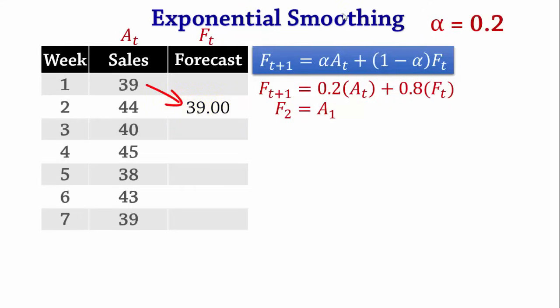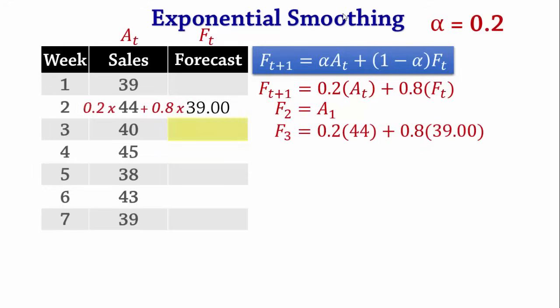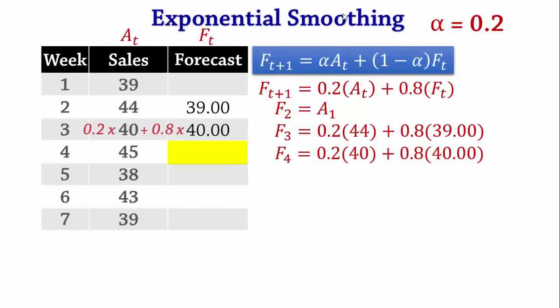Our first real use of the formula begins with F3. F3 = 0.2 × 44 + 0.8 × 39 = 40. Consequently, F4 = 0.2 × 40 + 0.8 × 40 = 40.